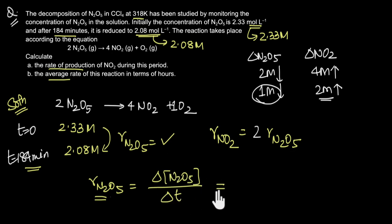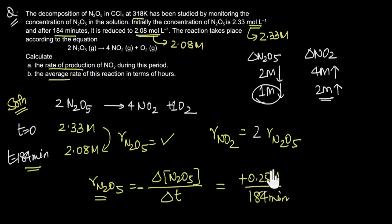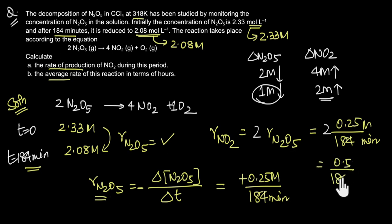The rate of disappearance of N2O5 is the change in concentration of N2O5 over the change in time. Change is final minus initial: 2.08 − 2.33 = −0.25 molar over 184 minutes. Because we report rates of disappearance as positive values, we put a minus sign, giving +0.25/184 minutes. So the rate of production of NO2 is 2 × (0.25/184) = 0.5/184, which equals 2.7 × 10⁻³ molar per minute.